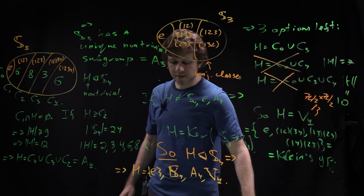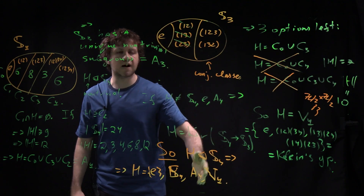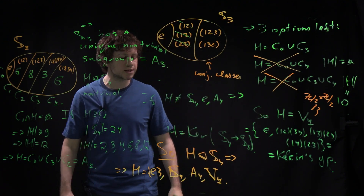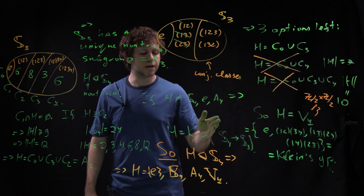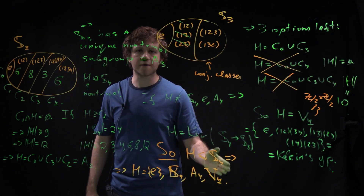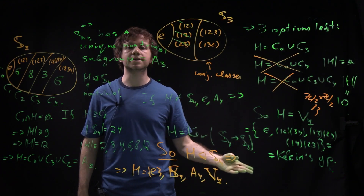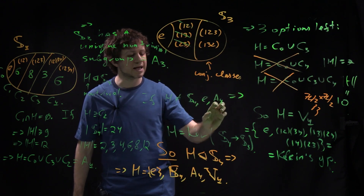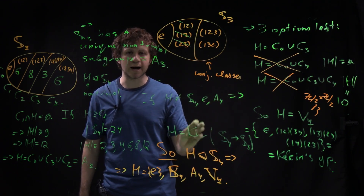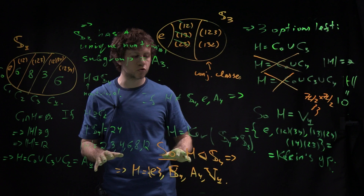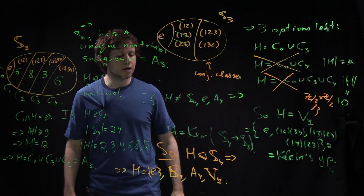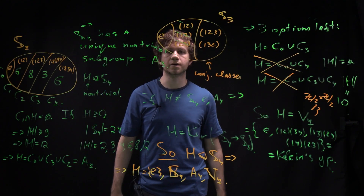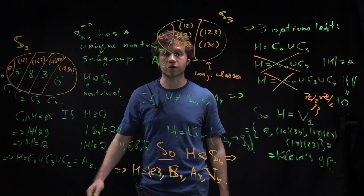You might expect that for S5, S6, and so on the story becomes more and more complicated. But actually, for S5 and beyond, Sn has only one non-trivial proper normal subgroup: An. Moreover, An itself has no normal subgroups. This will be seen in the homework.